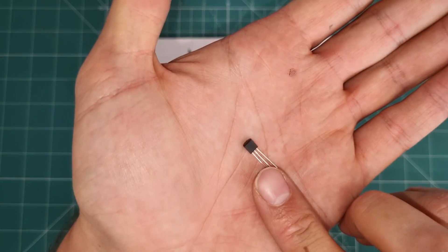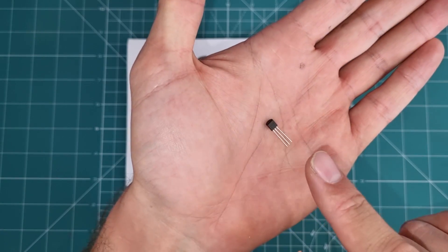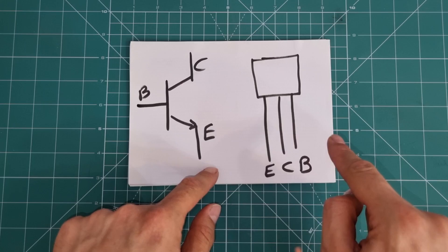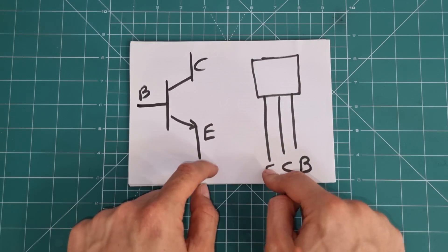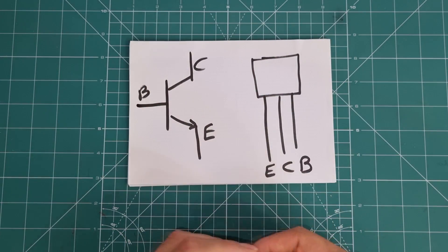This is transistor C945, a simple NPN transistor, and its pins are in this order: emitter, collector, and base. I found this in the data sheet. If you have to use another transistor, you must refer to its data sheet.